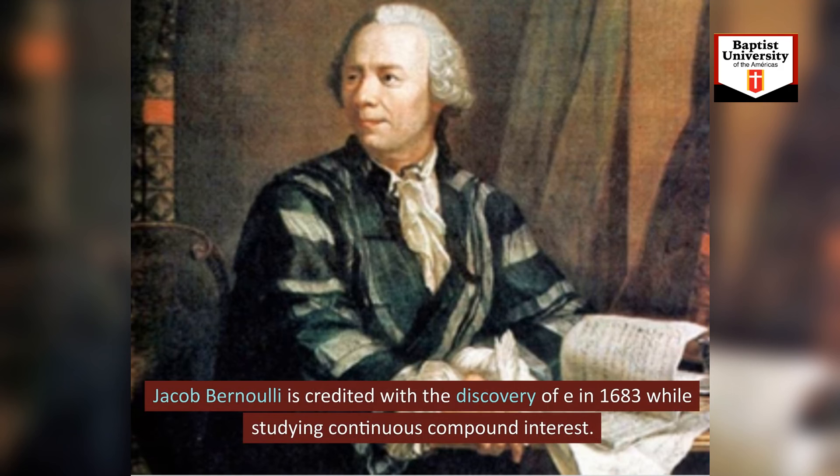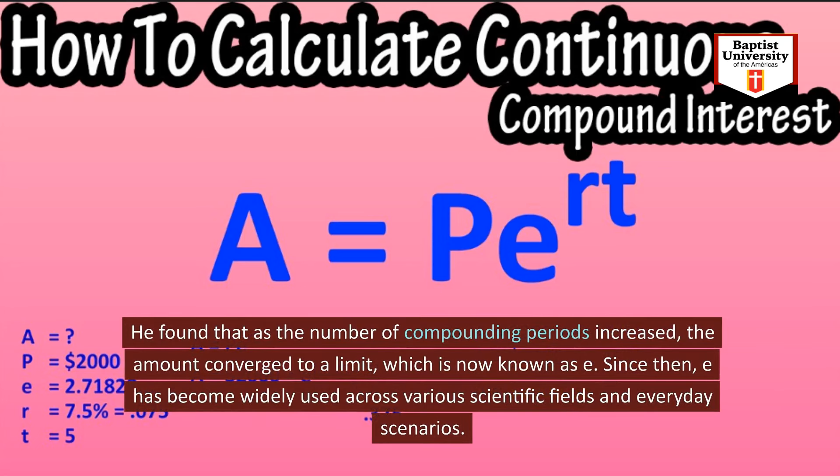Jacob Bernoulli is credited with the discovery of E in 1683 while studying continuous compound interest. He found that as the number of compounding periods increased, the amount converged to a limit, which is now known as E.